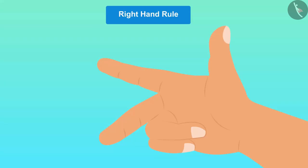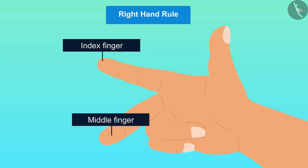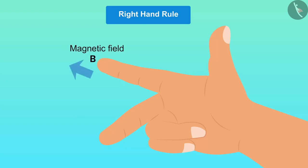This rule states that if the index finger, middle finger and thumb of the right hand are stretched so that all the three are mutually perpendicular to each other, then index finger will represent the direction of magnetic field lines, thumb will represent the direction of the motion, then the middle finger will give the direction of the induced current.